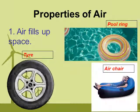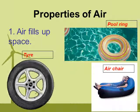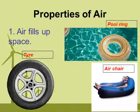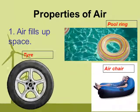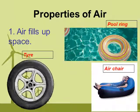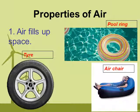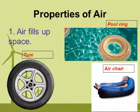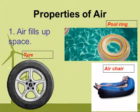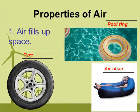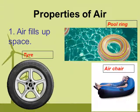Property one: Air fills space. What gives shape to a blown balloon or tire? When you blow air into the balloon or tire, the air takes up the space inside it and gives the balloon and tire its original shape. A few examples are pool rings and air chairs.